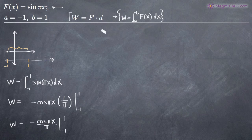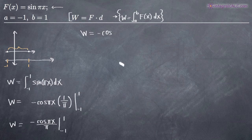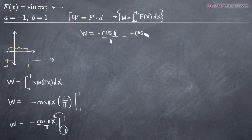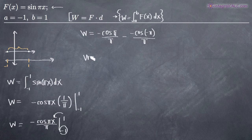When dealing with a definite integral, we plug in the upper limit first. Plugging in one for x gives us negative cosine of pi times one, which is negative cosine of pi, all divided by pi. Then we subtract what we get when we plug in the lower limit, negative one: we get negative cosine of pi times negative one, which is negative cosine of negative pi, all over pi.